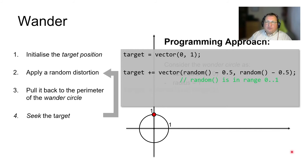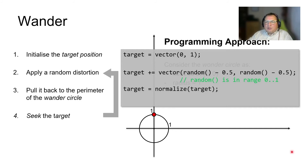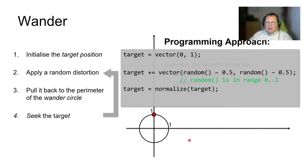The next step — pulling the target back to the perimeter of the wander circle — is surprisingly simple. Whatever are the coordinates of the target after the random distortion, if we normalize them, by definition a normalized vector has magnitude 1, so it will lie on the perimeter of this unit circle. This is a very elegant implementation. But of course the main question is: this wander circle should be at the wander distance in front of the moving agent and should have a wander radius, so we need to introduce an additional step: reposition the wander circle.